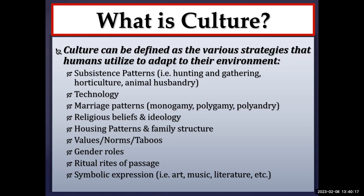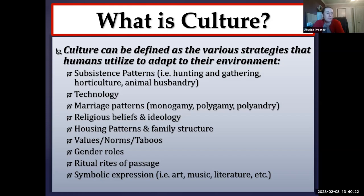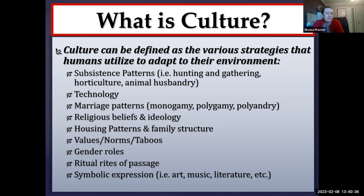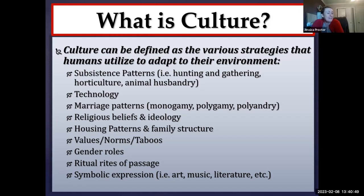Other behaviors considered taboo in American culture include incest — which is kind of a universal, as most cultures have some form of an incest taboo — practicing witchcraft, and early-age marriage. Early-age marriage is generational: my grandparents got married in their late teens, which was very normal then, but would cause people to pause today. That's a good example of something that may be considered taboo now that wasn't taboo in the past. And there could be plenty of examples going the other way — things once taboo that are no longer so, like tattoos, which were very taboo in my parents' and grandparents' generation but not so much anymore.